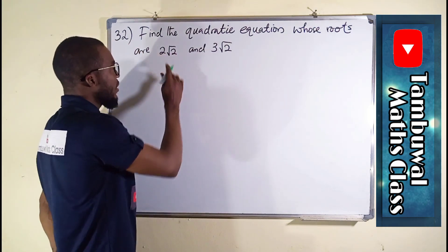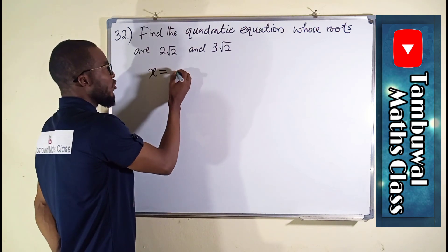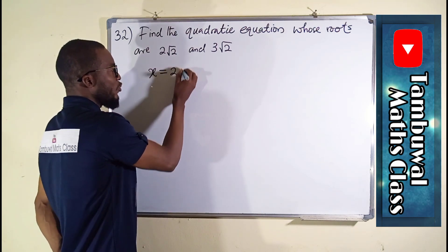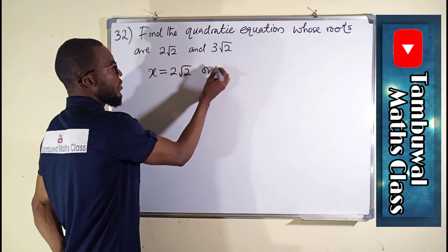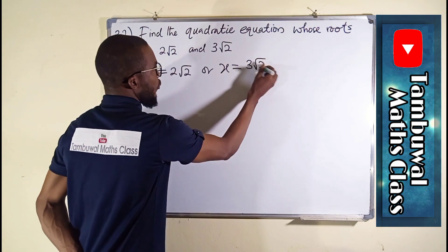So we can say, finally, because these are the roots, it means that x is equal to one of the roots, 2√2, or x is equal to the other root, which is 3√2.